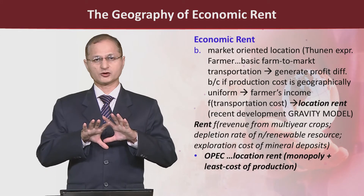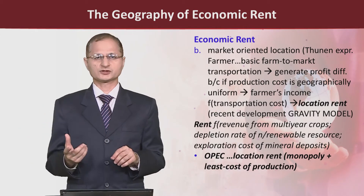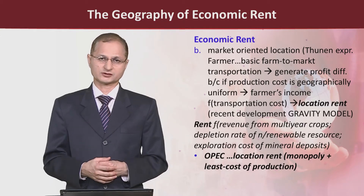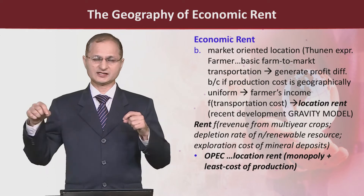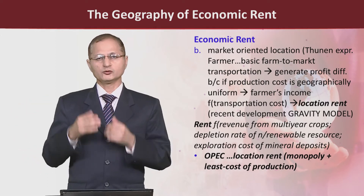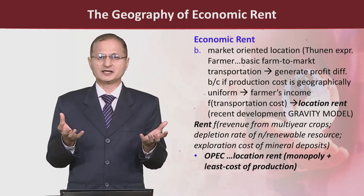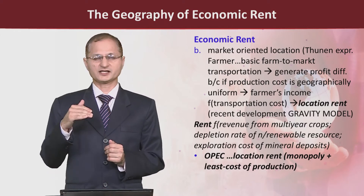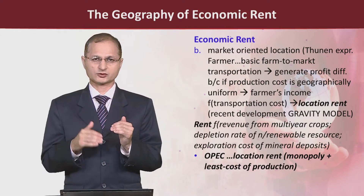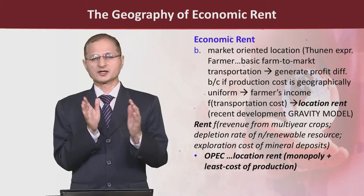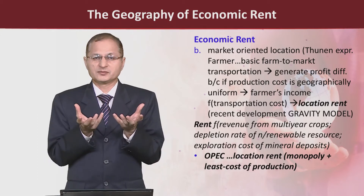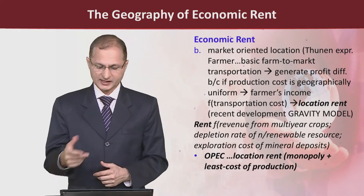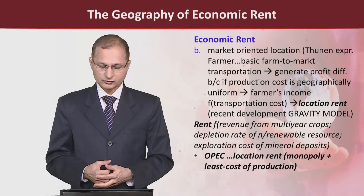Production cost is geographically uniform — for example, the production cost of wheat is the same everywhere with no difference — so farmer income is totally a function of transportation cost. The greater the distance to sell wheat in the market, the higher the transportation cost, so profit becomes a function of transportation cost. Farmers closer to the market gain more profit; those farther away earn less. He identified this as location rent.